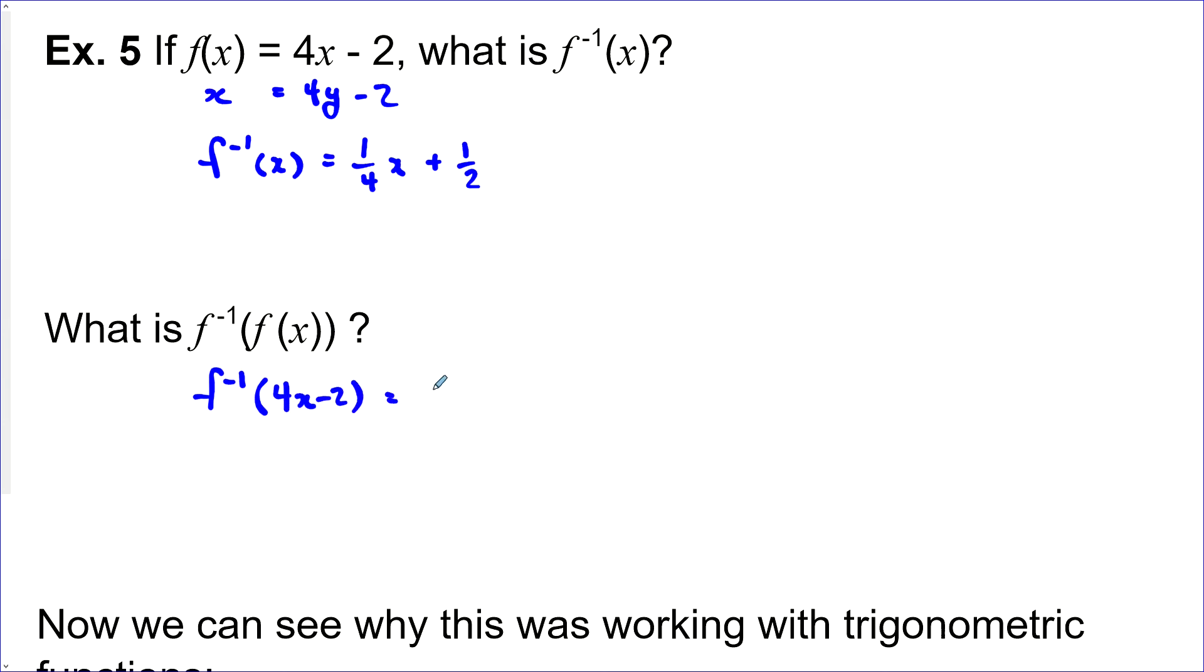And right here, 1 quarter, 4x minus 2 plus one half. Now let's just simplify this here. So when we multiply in the quarter here, then we get x, and this one you get minus one half and plus one half. So minus one half plus one half cancels out. And we're just left with x. And so that's what I mean when the function's inverse undoes or reverses any effect of x. So they essentially cancel out and you're just left with x.